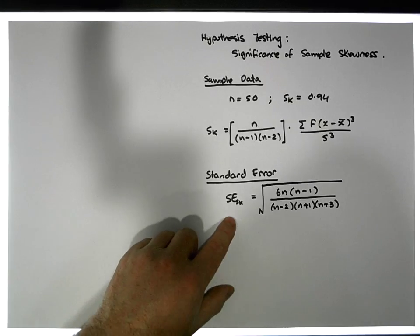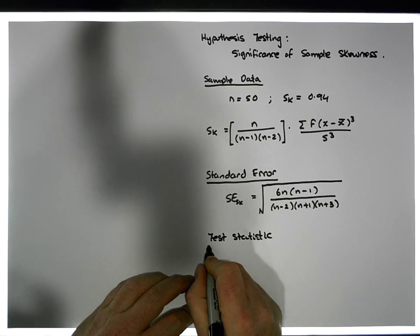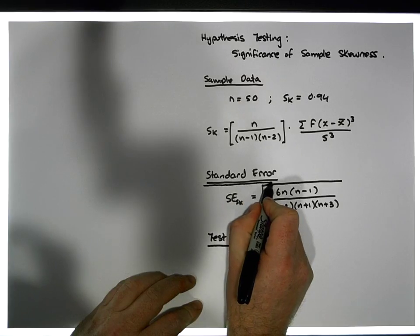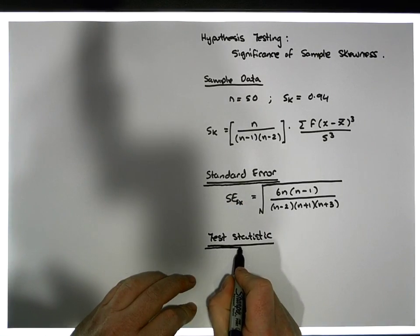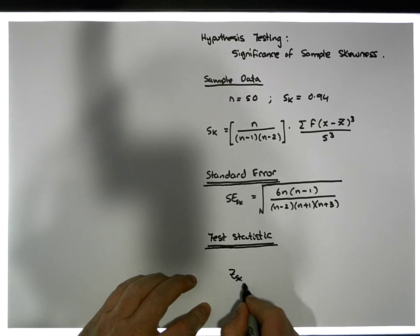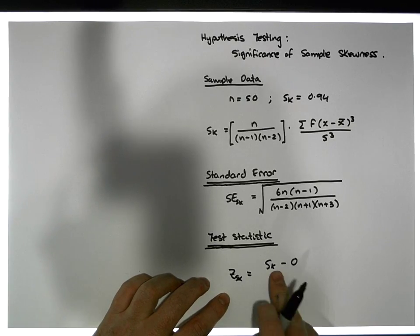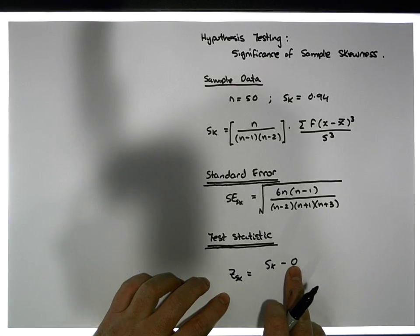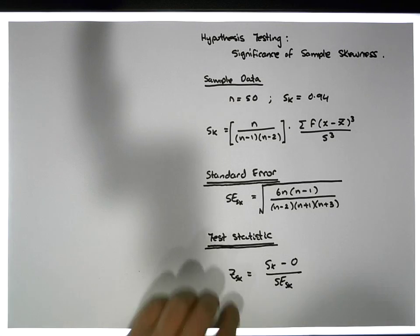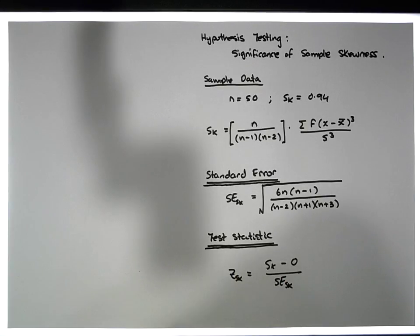The test statistic — which is really important — is a z statistic. For skewness, the z statistic equals the skewness value minus zero (we're hypothesizing a distribution with zero skew), divided by the standard error of the skew value. So we need these two things: the test statistic and the standard error.